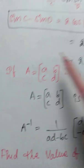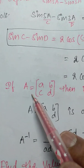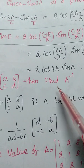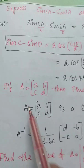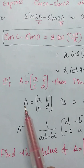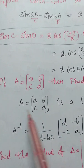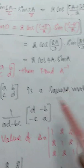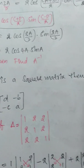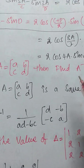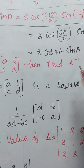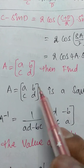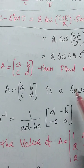Now let us discuss the second problem. If A is equal to the matrix [a, b; c, d], then find A inverse. The given value is A equals [a, b; c, d]. It is a square matrix.